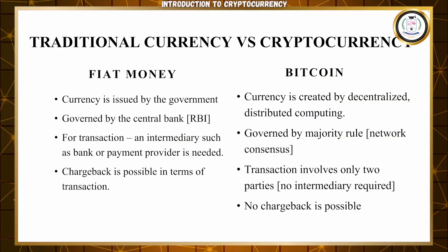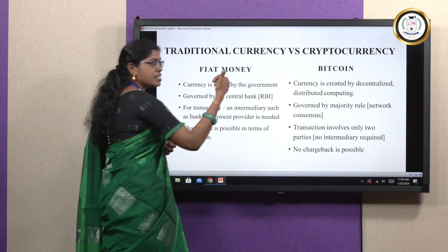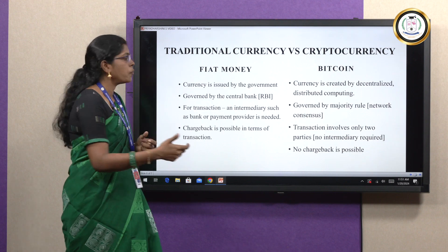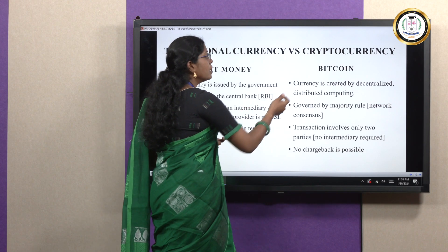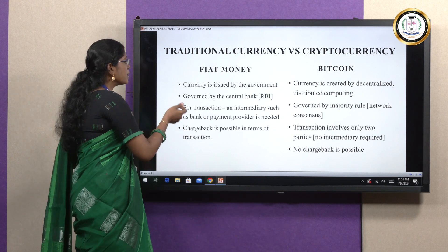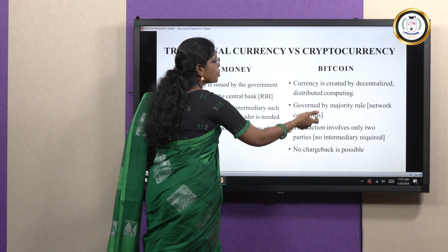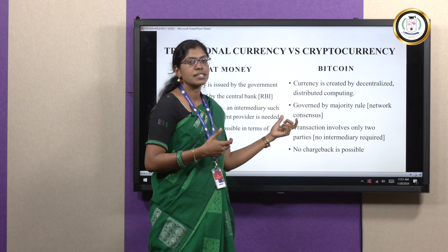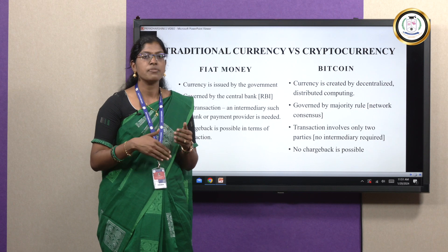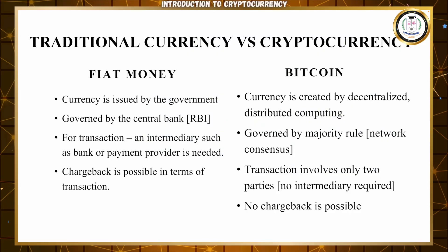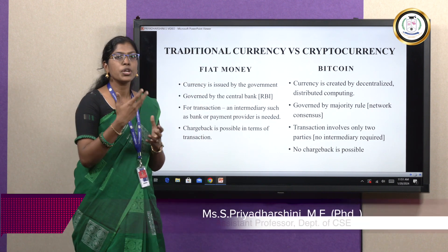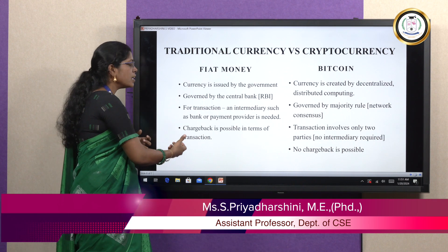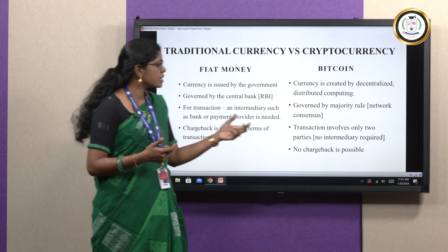Now we will see the difference between traditional currency and cryptocurrency — fiat money versus Bitcoin. Fiat money is issued by our government, whereas Bitcoin is decentralized, created through decentralized and distributed computing — it is a piece of programmable code governed by network consensus. In traditional transactions, an intermediary such as a bank or payment provider is needed, whereas in cryptocurrency the transaction involves only the two parties sending and receiving money. Finally, chargebacks are possible in traditional transactions, whereas in cryptocurrency a chargeback is not possible.